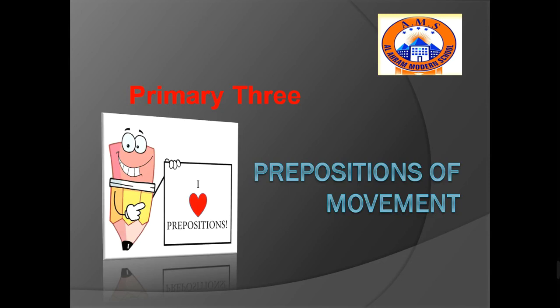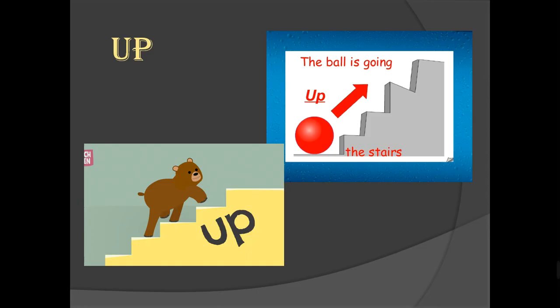The first preposition we have today is up. As you can see in the picture, the ball is going up the stairs. Can you see the arrow? Yeah, when I say up it goes up the stairs like this. The bear, can you see? I think the picture will help you more.